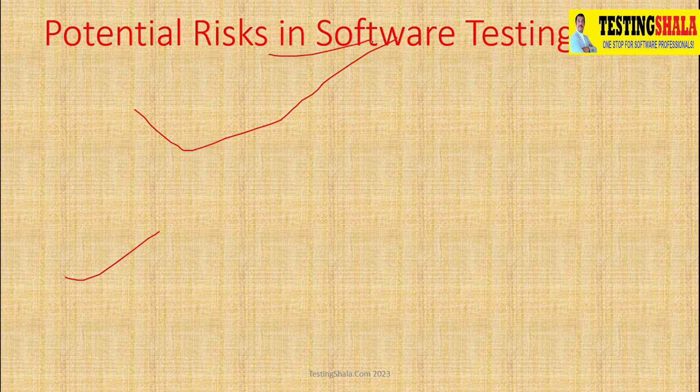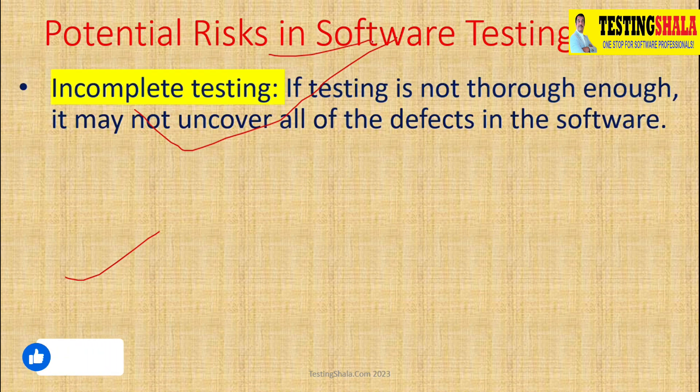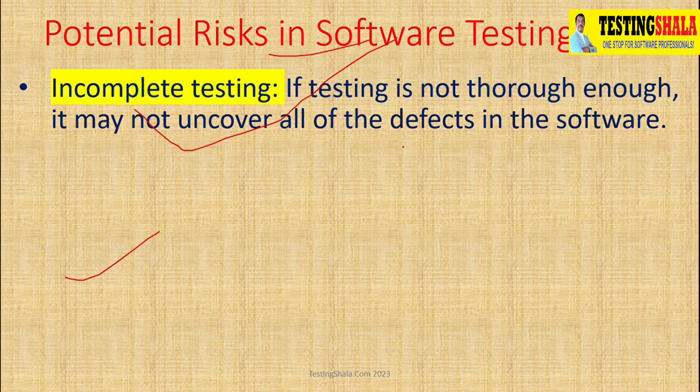The first key potential risk is incomplete testing. If the testing is not thorough and we have tested without uncovering all the defects in the software, then that becomes a potential risk for the customer. Because of that we should come up with a requirement traceability matrix that would guarantee enough test coverage, so we can avoid this potential risk of incomplete testing.